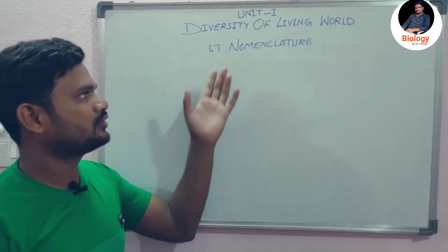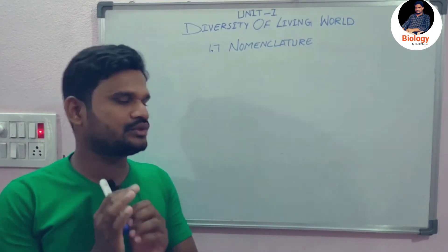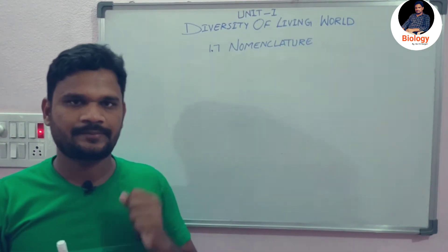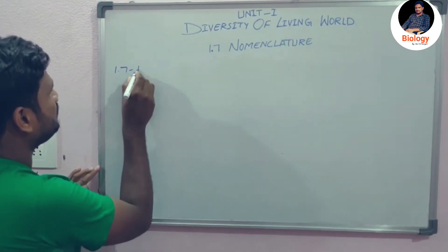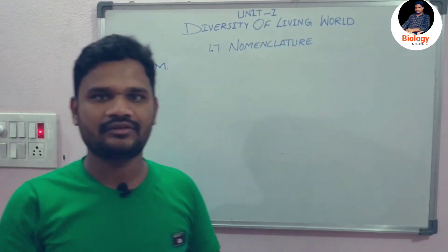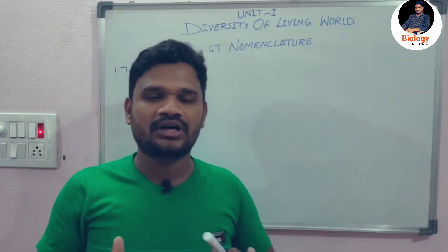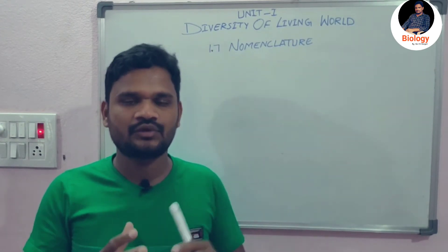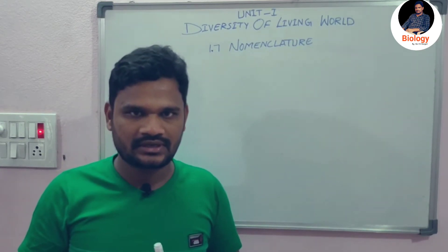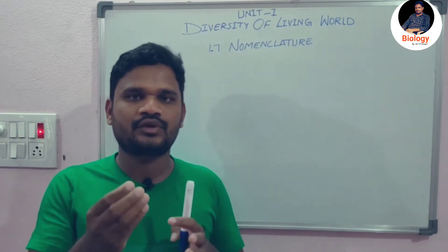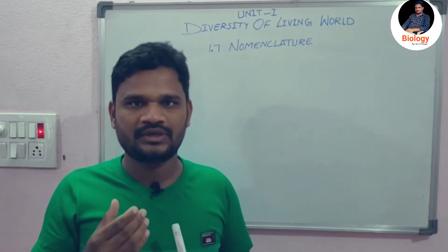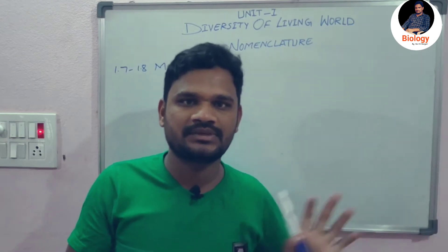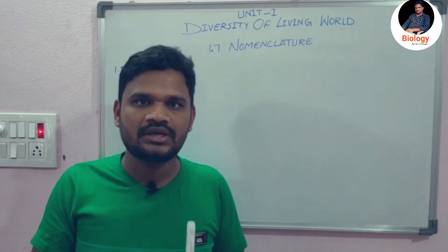Hello students, today's topic is nomenclature — this is your seventh sub-topic in your first unit, that is Diversity of Living World. On the earth there are 1.7 to 1.8 million organisms identified or described, which means it is an impossible task to remember each and every species. So we need to name them particularly. For example, my name is Karthikeyan — if you call me Karthikeyan, I will respond. So we need a particular name for each particular species, which is why nomenclature is very important.